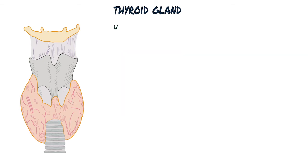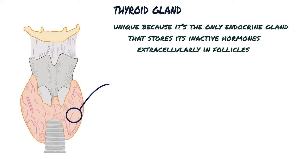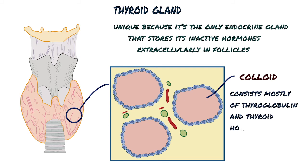The thyroid gland is unique because it is the only endocrine gland that stores its inactive hormones extracellularly in follicles. Each follicle is filled with a gel-like mass called colloid, which stains dark pink with hematoxylin and eosin. The colloid consists mostly of thyroglobulin and thyroid hormones that are bound to the colloid.